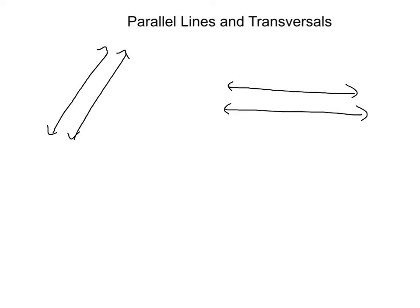A new symbol we're going to use to represent parallel lines is kind of like our congruent symbols, but instead of congruent symbols, they're arrows. So if you have two arrows, one on each line, that means they are parallel. For example, we could put two of these arrows, and that would mean that these two lines are parallel.